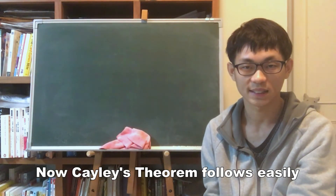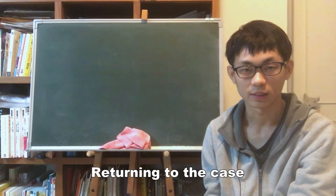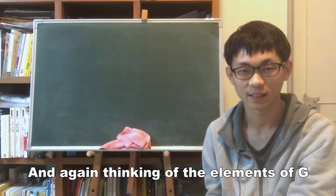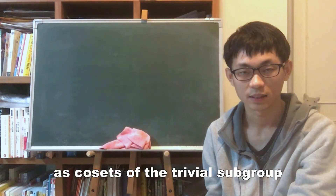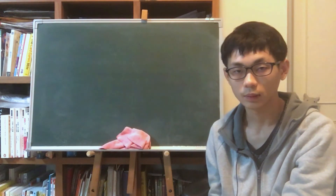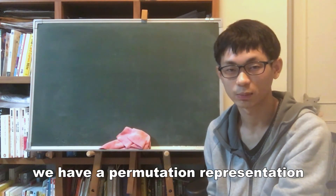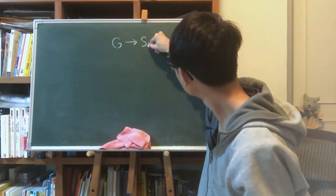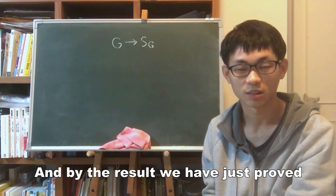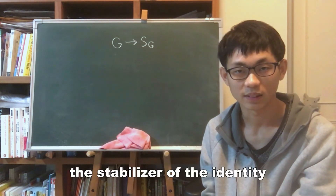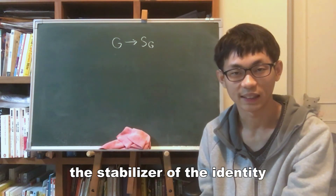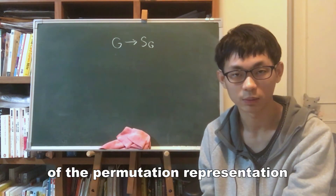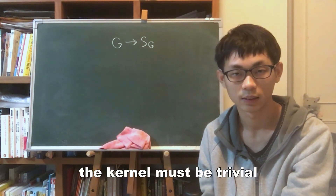Now Cayley's theorem follows easily. Returning to the case where G acts on itself by left multiplication, and thinking of the elements of G as cosets of the trivial subgroup, we have a permutation representation from G to S_G. By the result we have just proved, the stabilizer of the identity is the trivial subgroup. And since the kernel of the permutation representation is contained in any stabilizer, the kernel must be trivial.